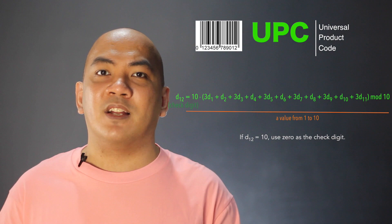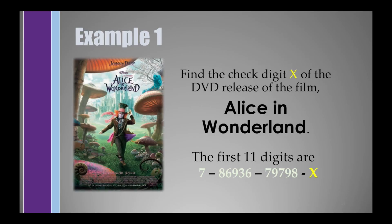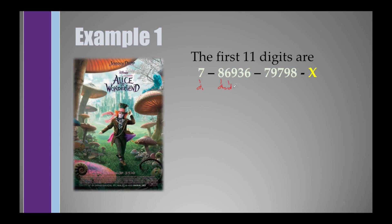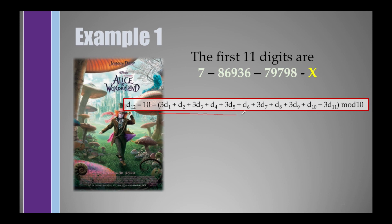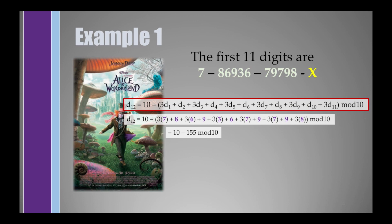For our first UPC example, let's find the check digit X of the DVD release of Alice in Wonderland, where the first 11 digits are 7,8,6,9,3,6,7,9,7,9,8. So D1=7 through D11=8. Substituting into the formula — multiplying the 1st, 3rd, 5th, 7th, 9th, and 11th digits by 3 — gives 155. Since 155 modulo 10 gives remainder 5, and 10 minus 5 is 5, the check digit D12 is 5.